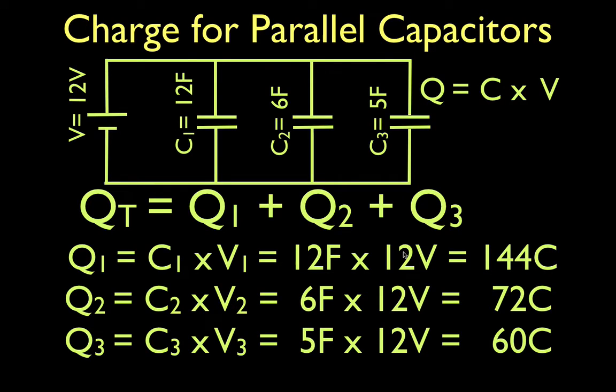We do the same thing for number three. Different capacitance, same potential across parallel capacitors as the battery, and we get 60 coulombs.